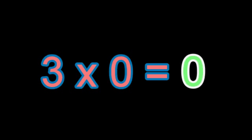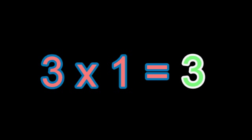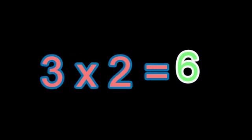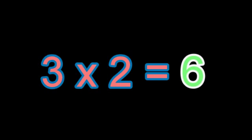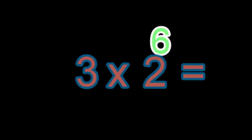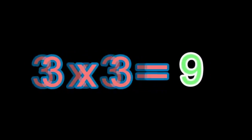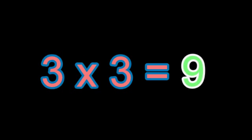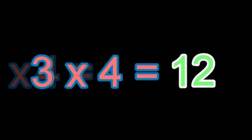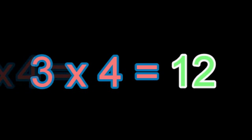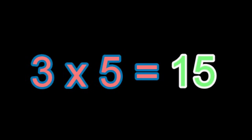3 times 0 equals 0. 3 times 1 equals 3. 3 times 2 equals 6. 3 times 3 equals 9. 3 times 4 equals 12. 3 times 5 equals 15.